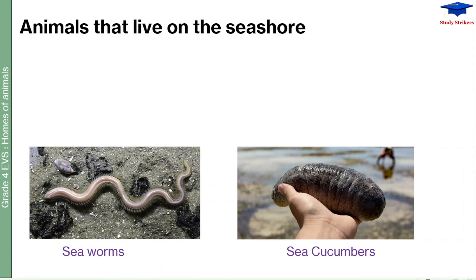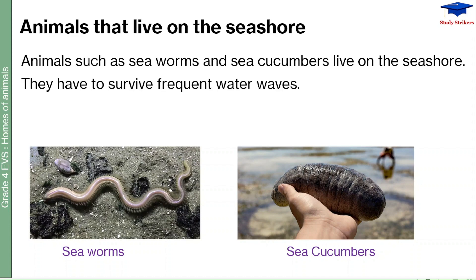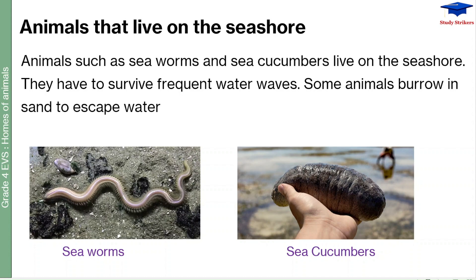Animals that live on the seashore include sea cucumbers — which are not made for eating — and sea worms, which look like worms but have many legs. Animals such as sea worms and sea cucumbers live on the seashore. They have to survive frequent water waves. Some animals burrow in sand to escape water waves and tides, similar to how we would hide from forceful tides at the shore.